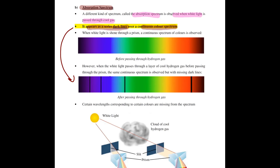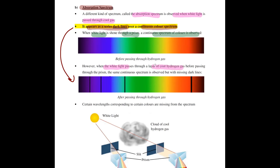If you were to shine white light into a prism, what comes out will usually be a continuous spectrum of colors. That is the color spectrum you observe before passing it through a cool gas. But when you pass that same white light through a layer of cool hydrogen gas before eventually passing it through a prism, you will still have the same continuous color spectrum, but there are a few missing dark lines.